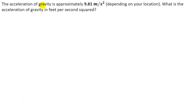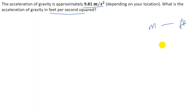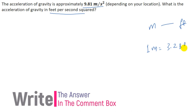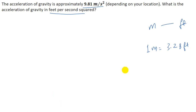The final question on unit conversion: acceleration due to gravity is 9.81 meters per second squared, and we have to write the acceleration in feet per second squared. The seconds squared are common on both sides, so basically we just have to convert meters to feet. The conversion is 1 meter equals 3.28 feet. You have to do this question on your own and write the answer in the comment box below.